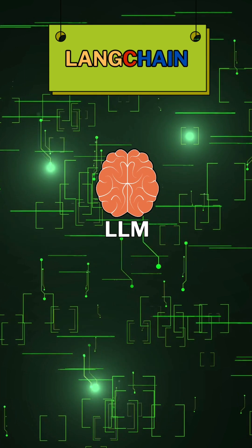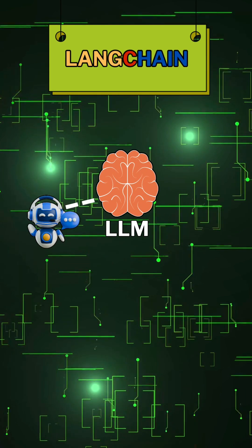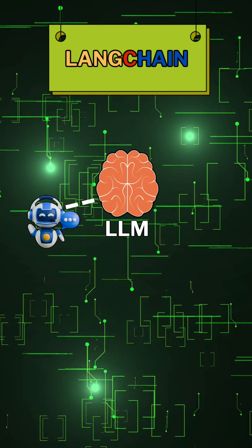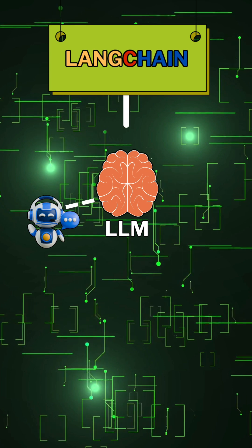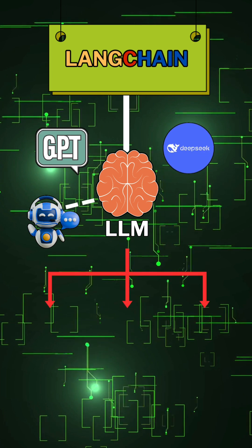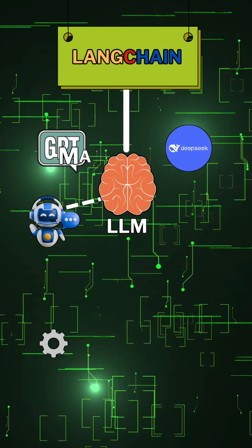First of all, LangChain is a basic LLM that can actually do things. And how does it do this? LangChain connects LLMs like GPT and DeepSeek with tools, memory, and logic.